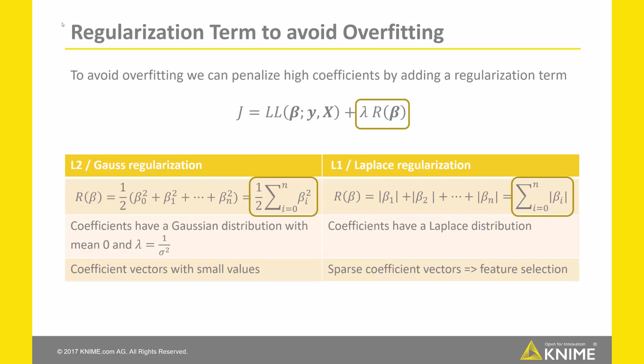Both L1 and L2 regularization have Bayesian interpretations as constraints on the priors. Gauss regularization assumes that the coefficients are Gaussian distributed with mean 0 and lambda equal to 1 divided by sigma squared. Laplace regularization assumes the coefficients are Laplace distributed. Where Gauss prefers coefficient vectors with many small coefficients, Laplace prefers sparse coefficient vectors with some larger values. Therefore, Laplace regularization can be used for automatic feature selection.